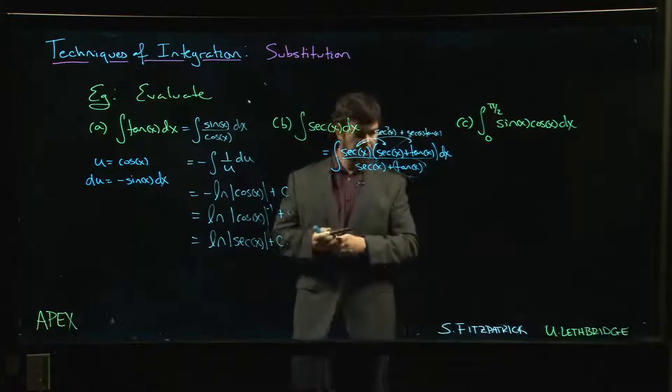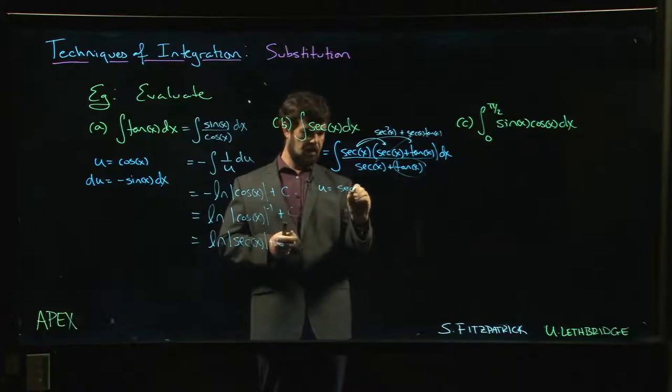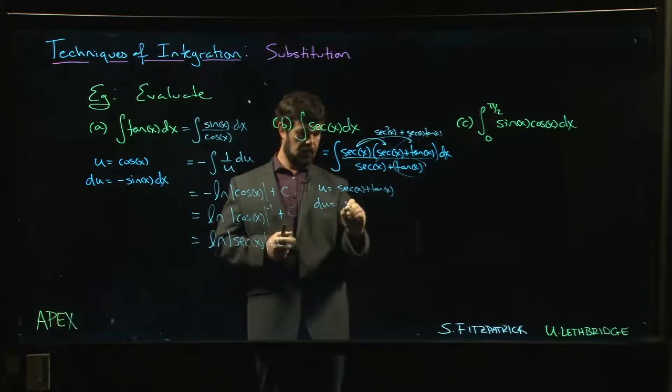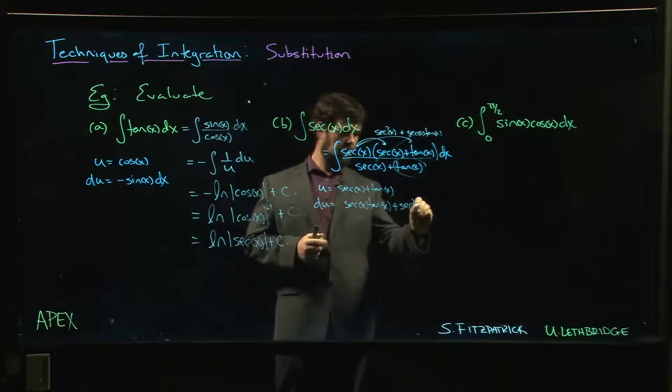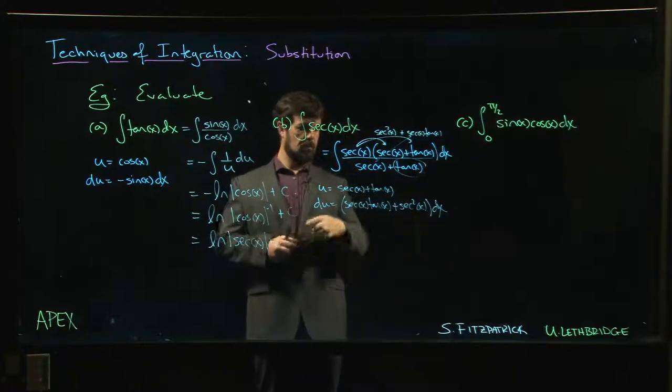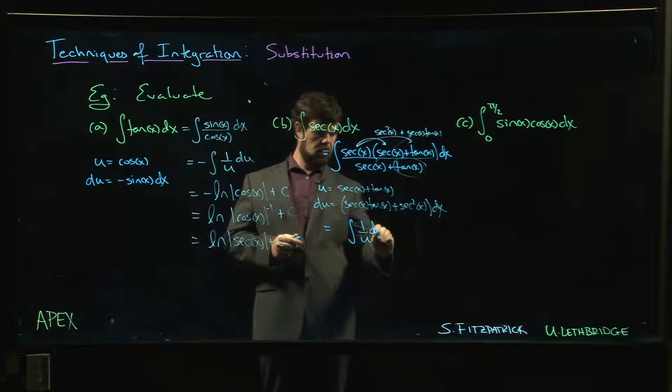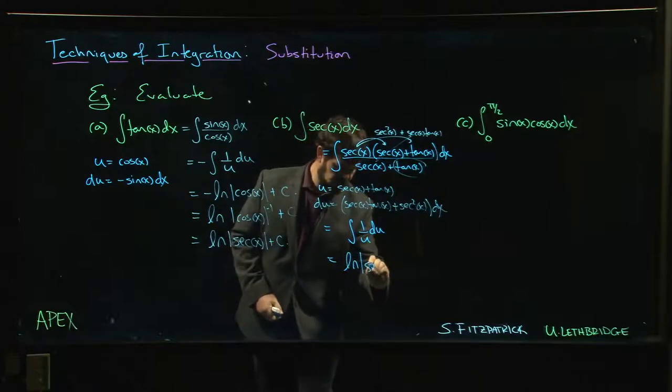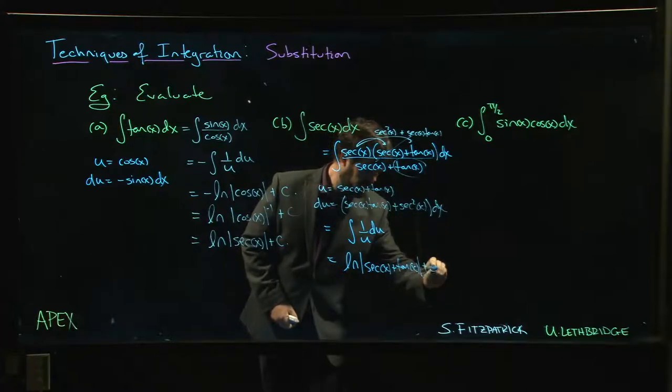We have u is secant x plus tan x, du is secant x tan x plus secant squared x dx. And this whole thing, well it just becomes one over u times du, just like here: natural log absolute value secant x plus tan x plus C. Cool.